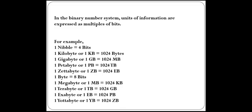You must have heard of KB, MB, GB, TB, and PB. The shortest unit of memory is a bit. A group of 4 bits is known as a nibble. A group of 8 bits is known as a byte. 1024 bytes is a kilobyte. 1024 kilobytes is a megabyte. 1024 megabytes is a gigabyte. 1024 gigabytes is a terabyte. 1024 terabytes is 1 petabyte. 1024 petabytes is 1 exabyte. 1024 exabytes is 1 zettabyte, and so on.